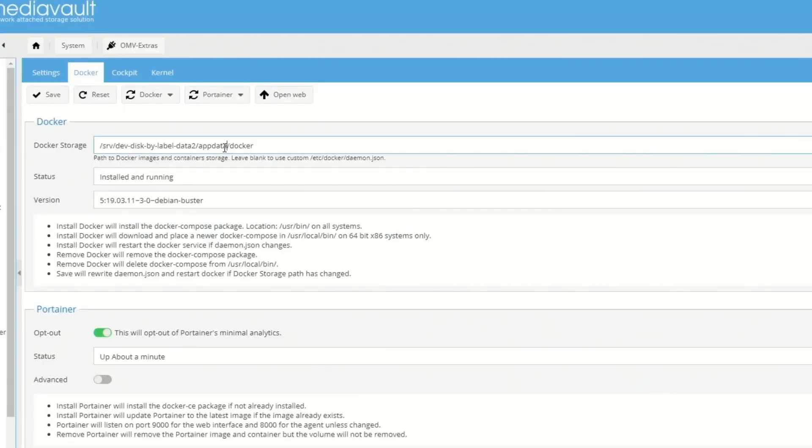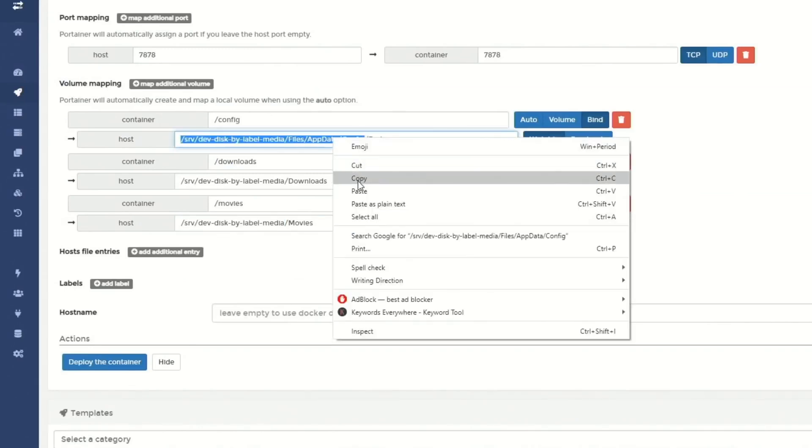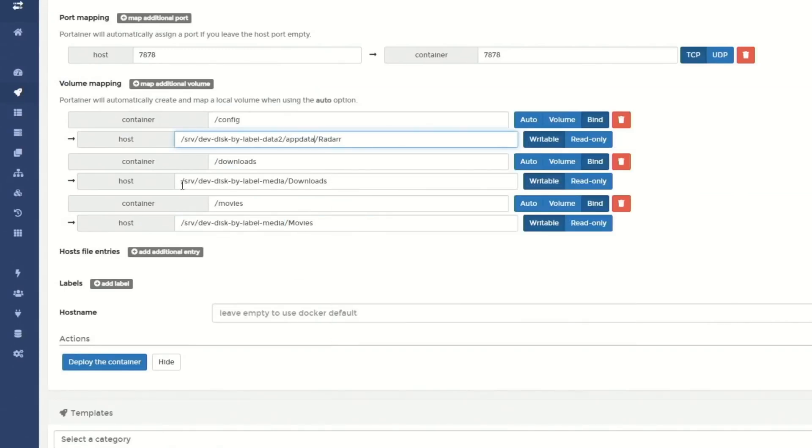And then we're going to put in our absolute path to our shared folders here. Here, here, and here. So now we can just copy this. Paste that there. Same thing there.